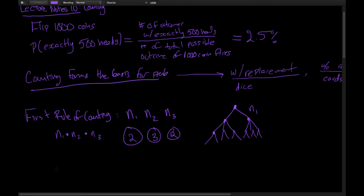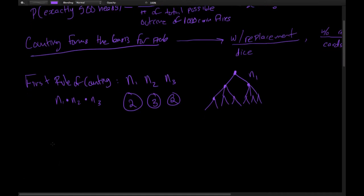Let's apply the first rule of counting to the with-replacement case. Imagine you are rolling dice. If you have k rolls, the first rule of counting says the number of total possibilities is 6 to the k, because on each roll you had six options — first roll six options, second roll six options, and so on all the way to k rolls.